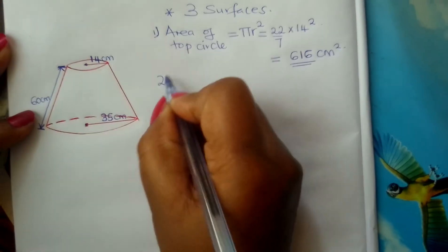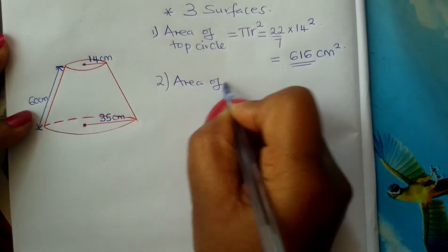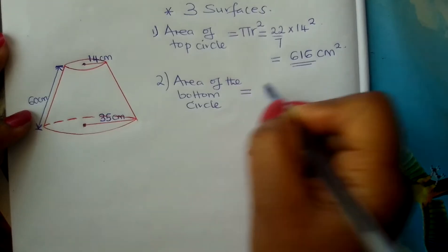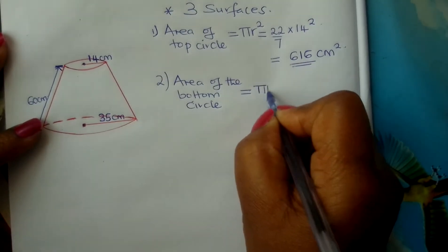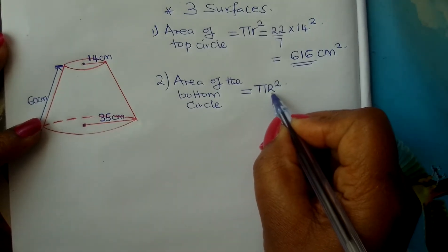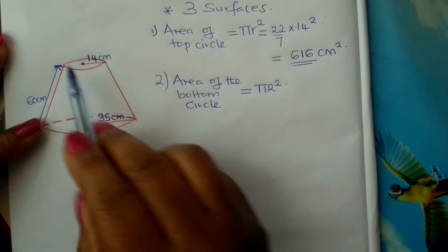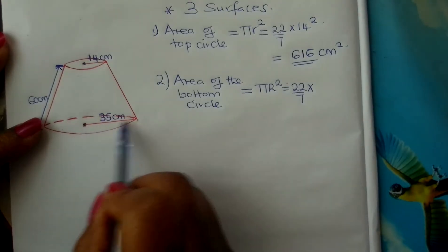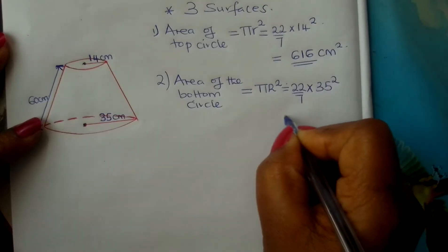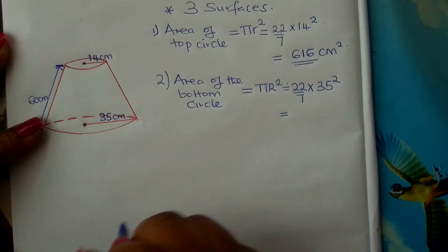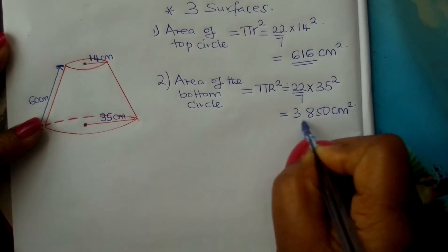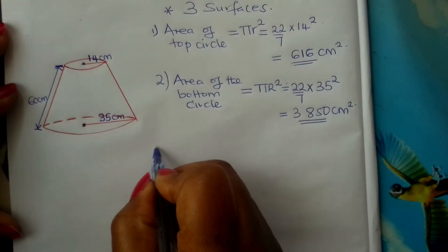We go to the bottom circle. The area of the bottom circle is also π r². We use capital R here because this circle is bigger than the top one. Therefore this will be 22/7 times 35 squared. Using a calculator you should get 3,850 centimeters squared.